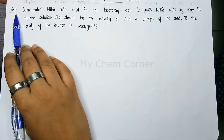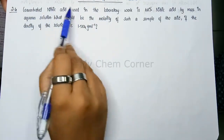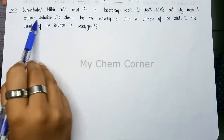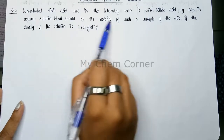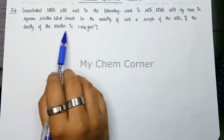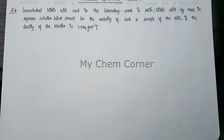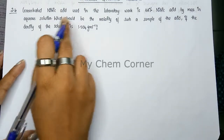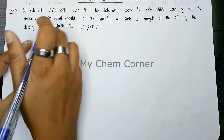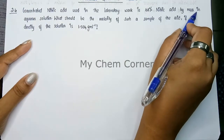Next is question number 2.4. The problem states: concentrated nitric acid used in laboratory is 68% nitric acid by mass in an aqueous solution. What should be the molarity of such a sample of acid if the density of the solution is 1.504 gram per mL?